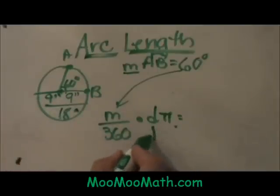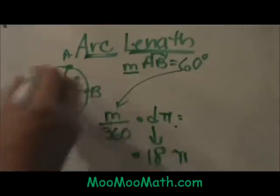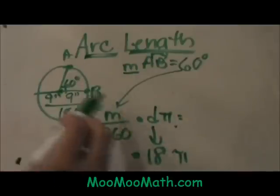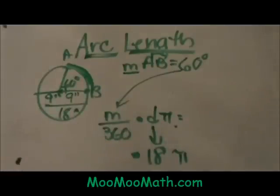So I will plug 18 in for my diameter times π and then I will multiply that. That is my circumference of my circle. Now this arc is not the whole circle. What fraction of the circle is it?